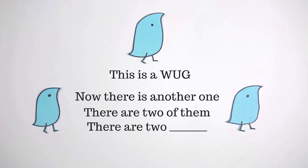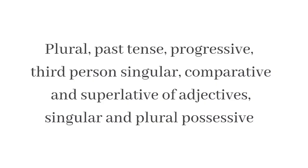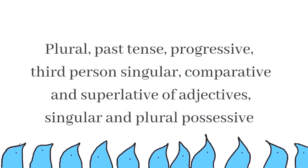The morphemes that the researchers focused on were 28 structures of morphemes in plurals, past tense, progressive, third-person singular, comparative and superlative of adjectives, and singular and plural possessive.